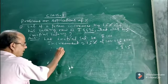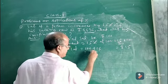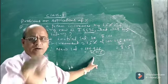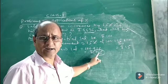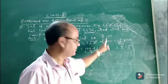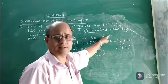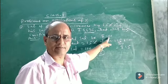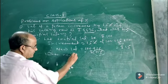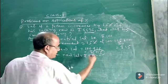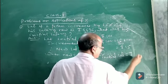Therefore, the new salary will be 100 plus 15, that is rupees 115. This new salary of 115 corresponds to an initial salary of 100. Now we are doing the unitary method, so when new salary equals 115, initial salary equals 100.